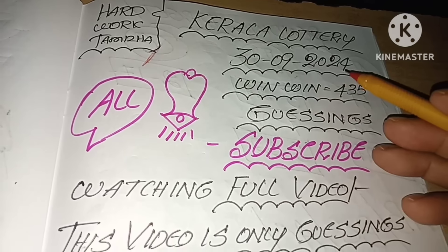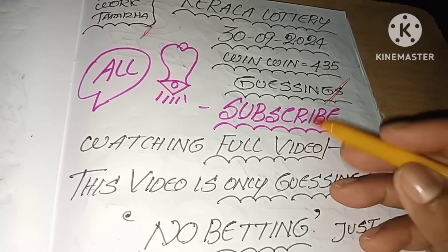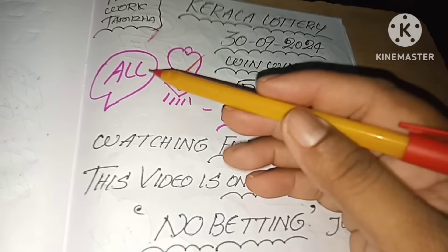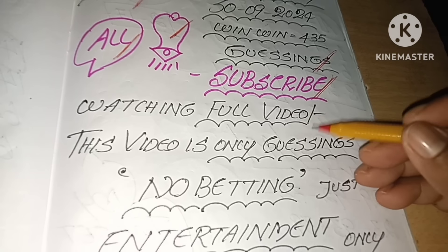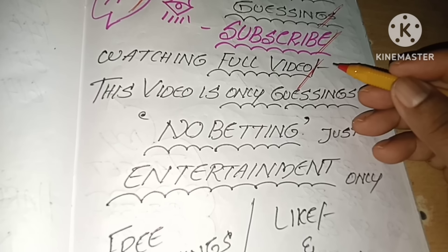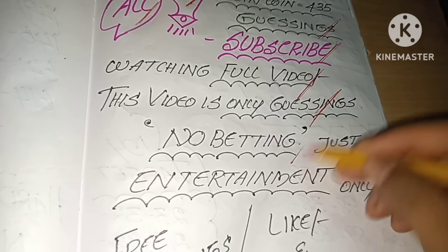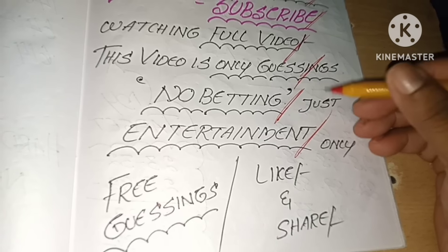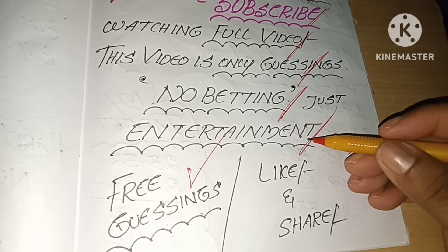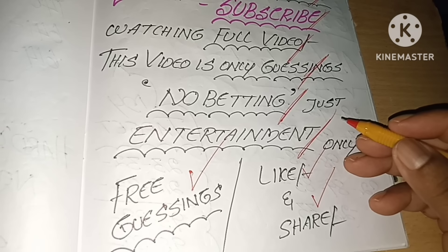We are here with Kerala Lottery 309-2424-355. If you have a first time watching our channel, subscribe, click the bell icon and notification bell. Please like or share the video.